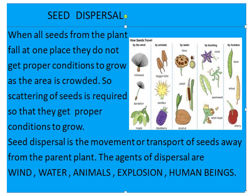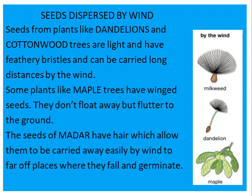Seeds dispersed by wind. Seeds from plants like dandelions and cottonwood trees are light and have feathery bristles and can be carried long distances by the wind. Some plants like maple trees have winged seeds — they don't float away but flutter to the ground. The seeds of madar have hair which allow them to be carried away easily by wind to far off places where they fall and germinate.